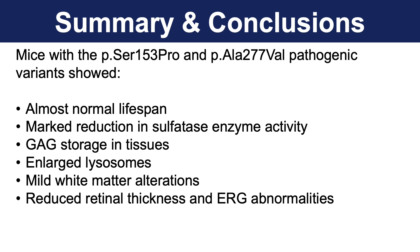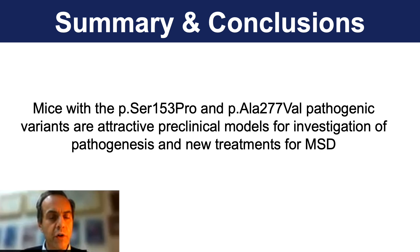In summary, we generated two new mouse lines of multiple sulfatase deficiency carrying a missense variant in SUMF1 that showed an almost normal lifespan, but with marked reduction of all sulfatase enzyme activities tested, storage of glycosaminoglycans in tissues, enlarged lysosomes, mild white matter alterations, reduced retinal thickness, and ERG abnormalities. Overall, these mice are significantly less severe than the null-knockout mice previously generated, and they can be used for further investigation of disease mechanisms and to investigate new treatments for multiple sulfatase deficiency.